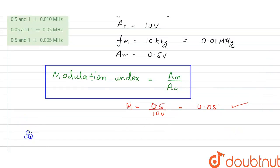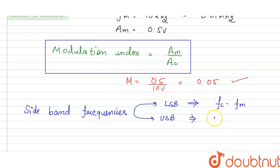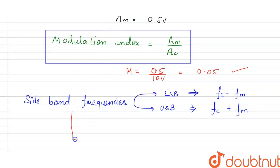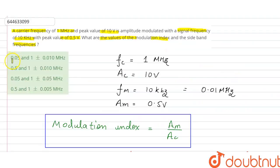Now we have to find the sideband frequencies. For calculating sideband frequencies we need to know two things: the lower sideband and the upper sideband. The lower sideband equals the frequency of the carrier wave minus the frequency of the modulation wave, and the upper sideband equals the carrier wave frequency plus the modulation wave frequency. So the sideband frequencies are given by 1 ± 0.01 megahertz. The correct option is A: modulation index 0.05 and sideband frequencies 1 ± 0.01 megahertz.